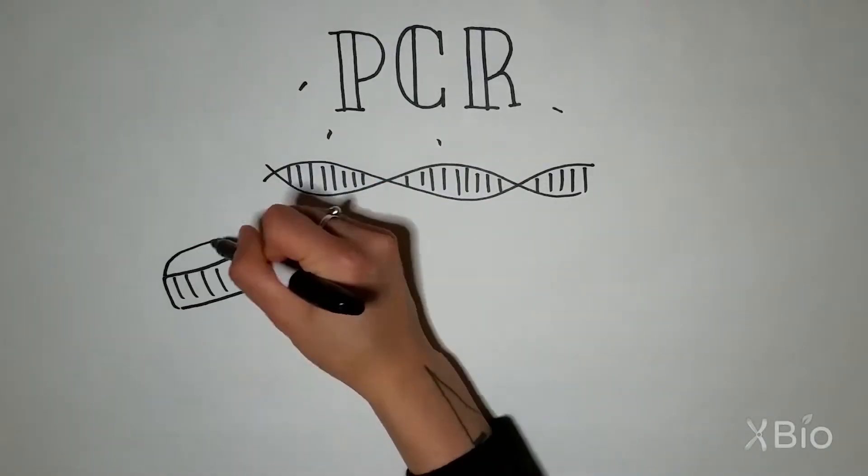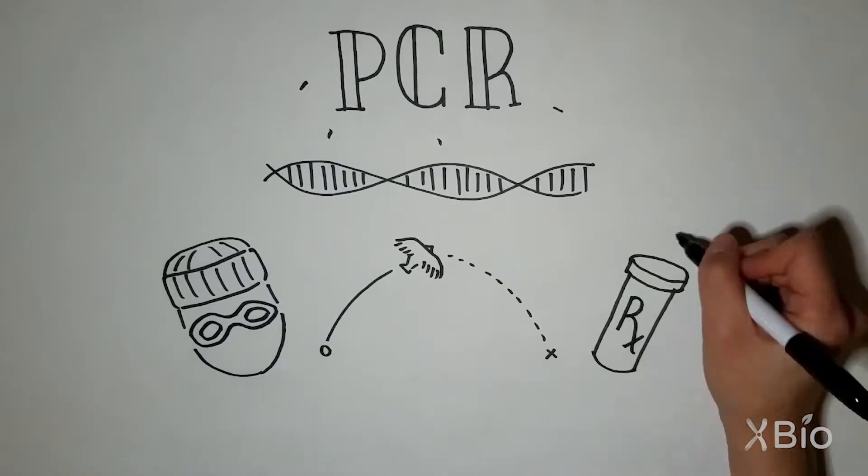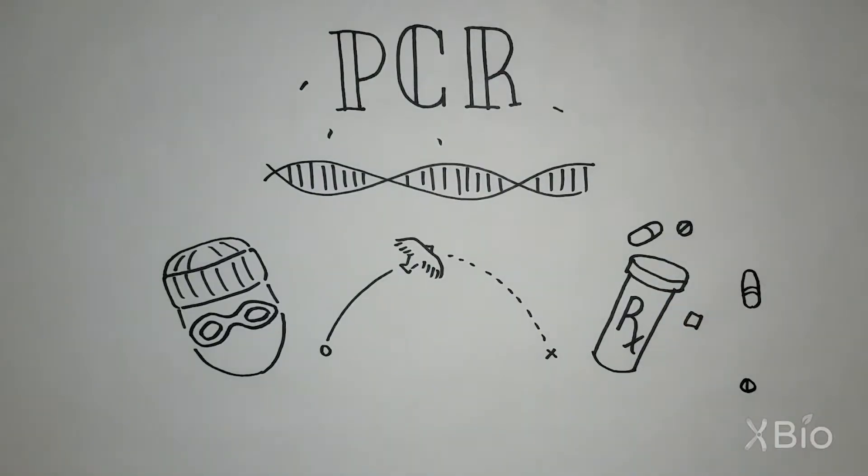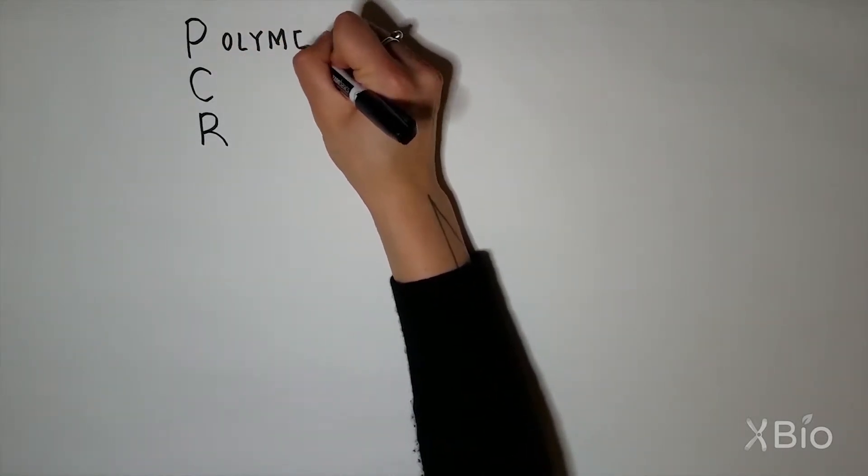Scientists can use DNA to pinpoint criminal suspects, trace migration patterns, modify organisms to produce medicine, the list goes on and on. But to do any of this stuff with DNA, we need a lot of it. That's where PCR comes in.